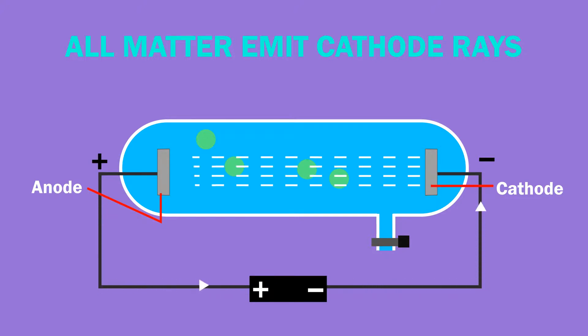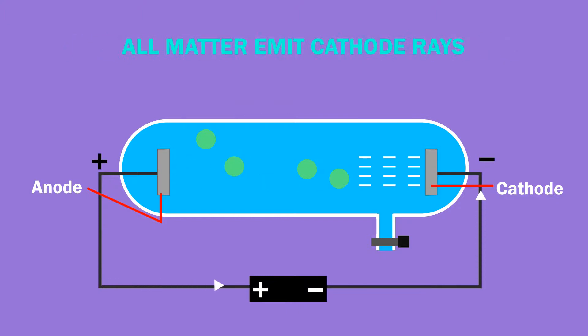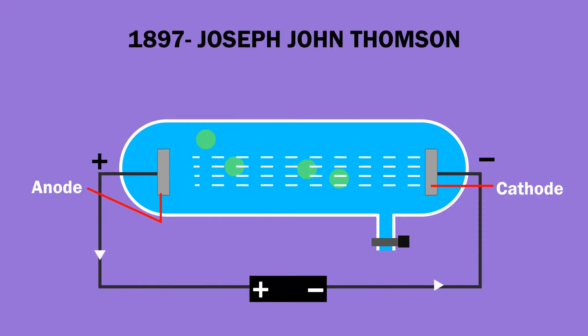After knowing all the properties of cathode rays, in 1897, another British scientist John Joseph Thomson called the particles in the ray electrons and said that cathode rays are nothing but electrons traveling from cathode to anode.